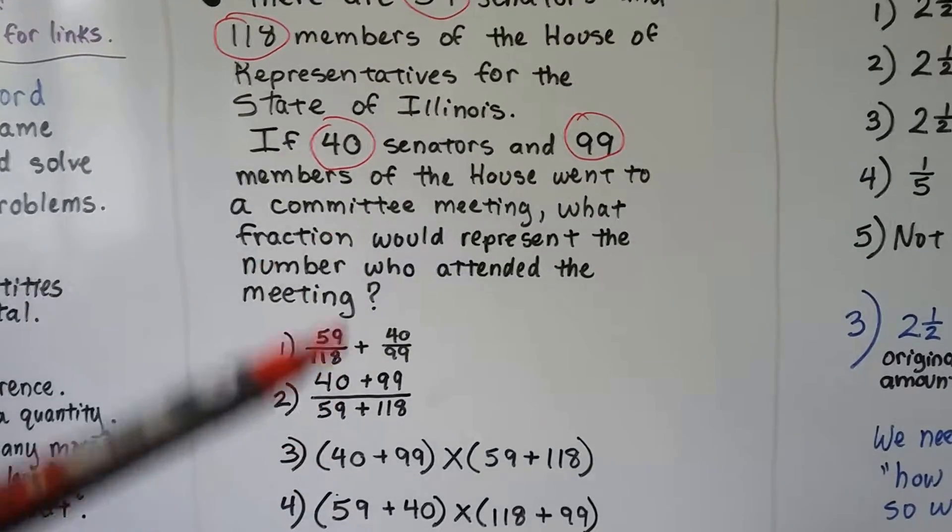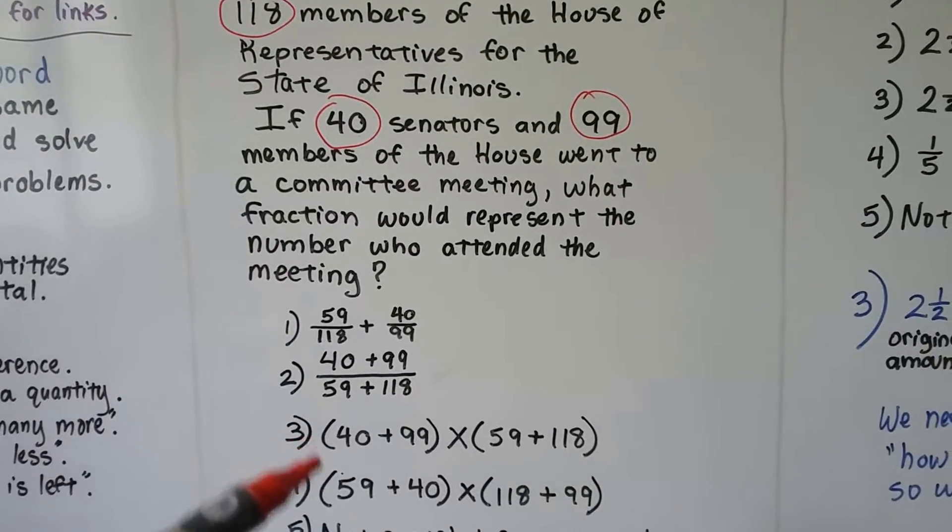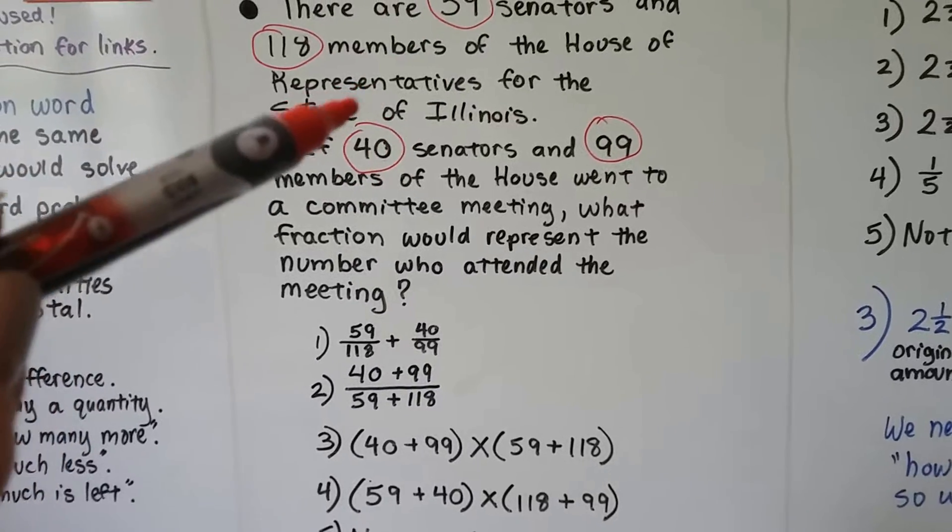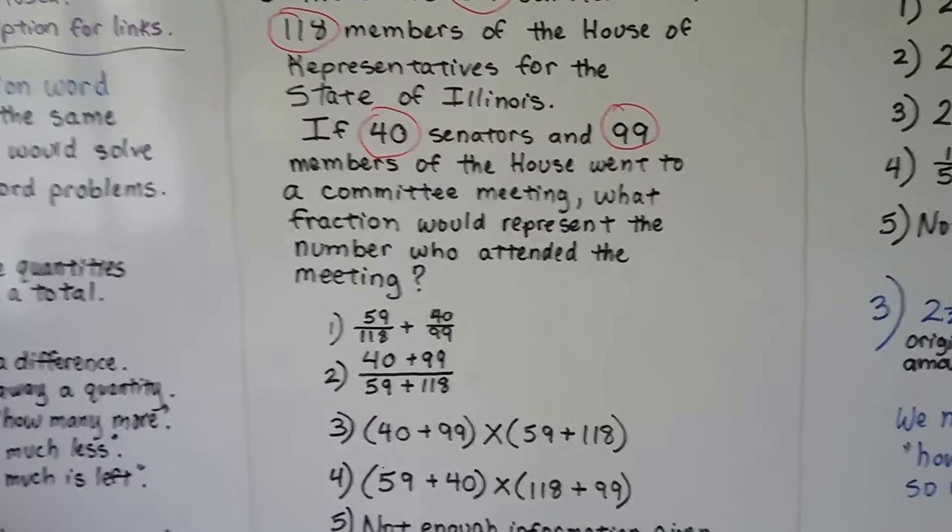Or would we add these two together and multiply it to these two added together? That would be 3. Or would we add these two together and multiply it to these two added together? Or is there not enough information?